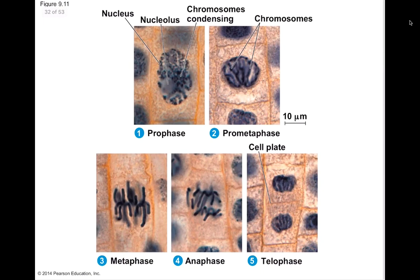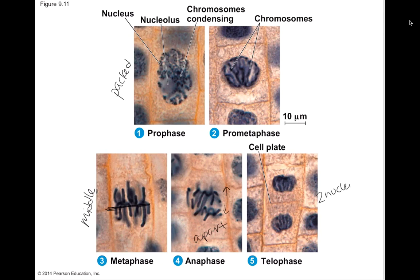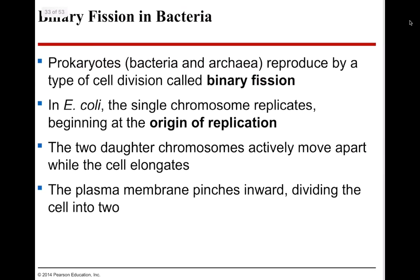Here's what mitosis actually looks like in plant cells, which is typically what you'll be asked to identify in test questions with actual pictures. In prophase: very packed chromosomes. In prometaphase: an in-between step that looks like a mix between prophase and metaphase. In metaphase: chromosomes lined up along the middle of the cell. In anaphase: chromosomes starting to separate apart. In telophase: two nuclei in the same cell, and you can start to see the vesicles forming the cell plate.